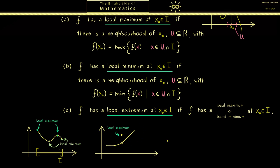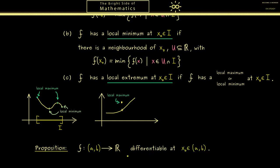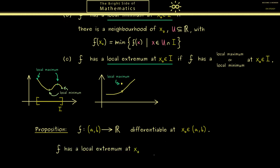In fact, for differentiable functions we have a very nice necessary condition for local extrema. So let's put this into a proposition. We don't have this condition for boundary points, so I immediately choose an open interval as the domain. Our assumption is that at the point x0 the function is differentiable. Then we have the following implication: if f has a local extremum at x0 — a local maximum or minimum — then f'(x0) is equal to 0. So the derivative has to vanish at this point.